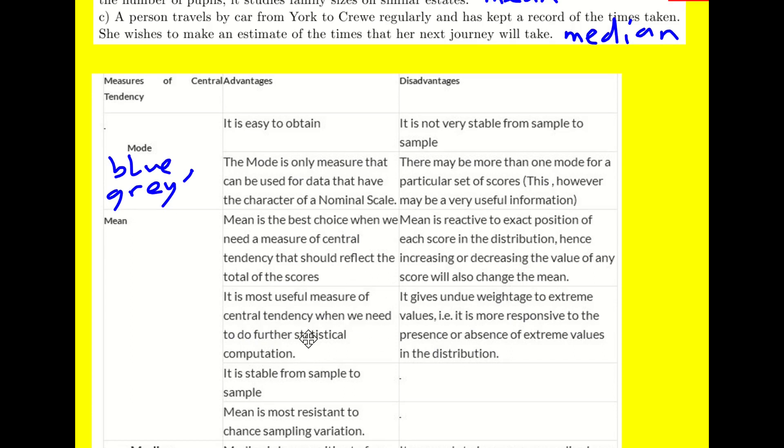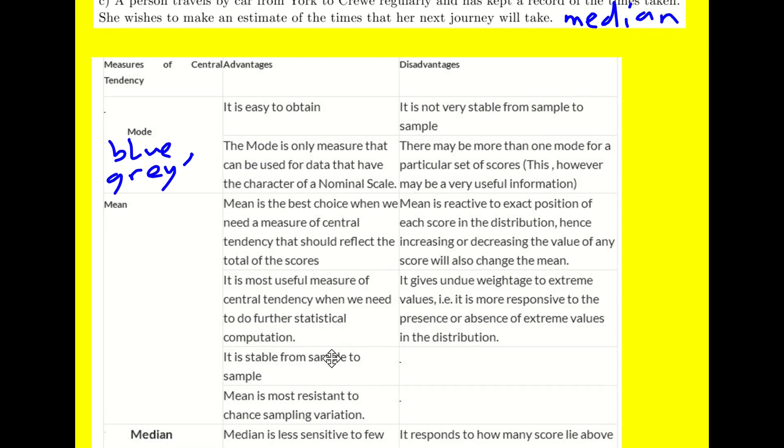That you'll see more of that later on. It's stable from sample to sample, and it's most resistant to chance sampling variations. So we said with the median and the mode that that wouldn't be the case.